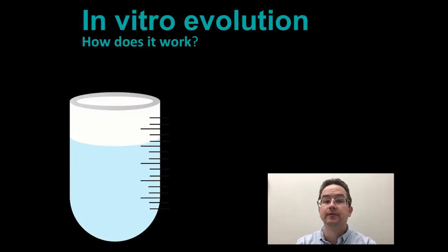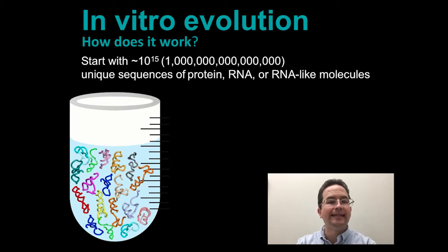So, how does in vitro evolution work? Well, in general, the first step is to generate an extremely diverse population of molecules. Experiments often start with something like 10 to the 15 different sequences of proteins, RNA, or RNA-like molecules. Now, that's a whole lot of zeros, and that adds up to a tremendous amount of diversity.